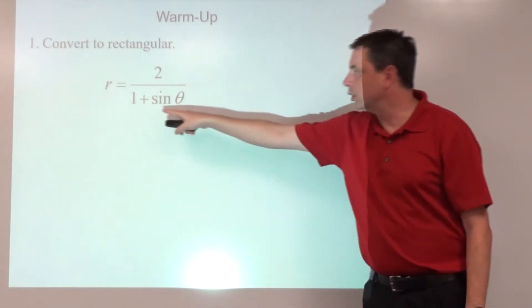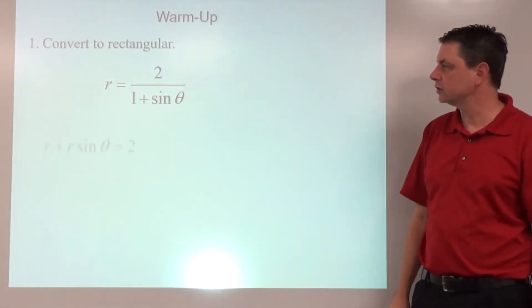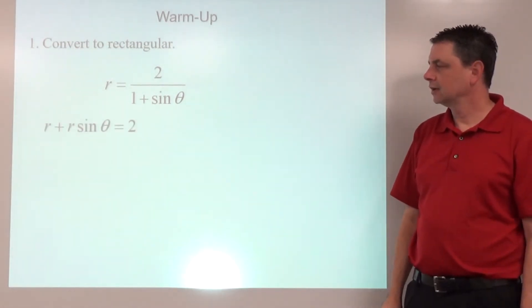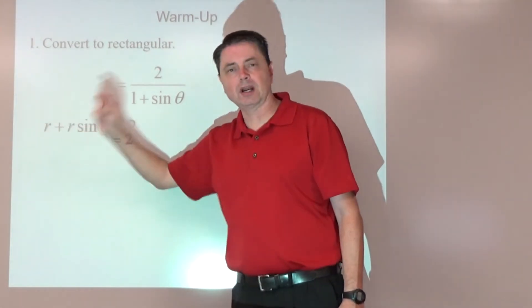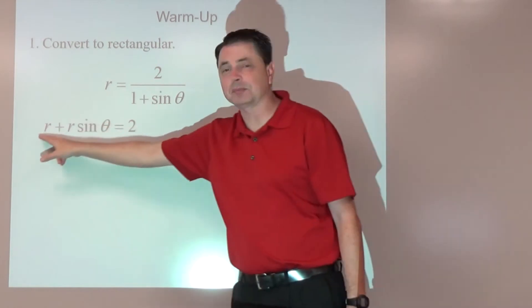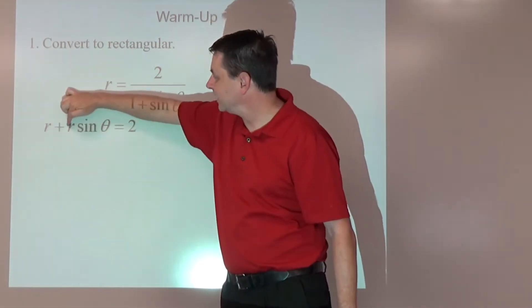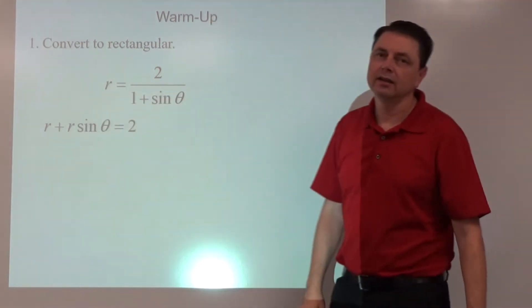We're going to multiply both sides by 1 plus sine theta first, and then we're going to do our conversions. Remember, r squared is x squared plus y squared, so r has to be the square root of that, and then r sine theta is just y.